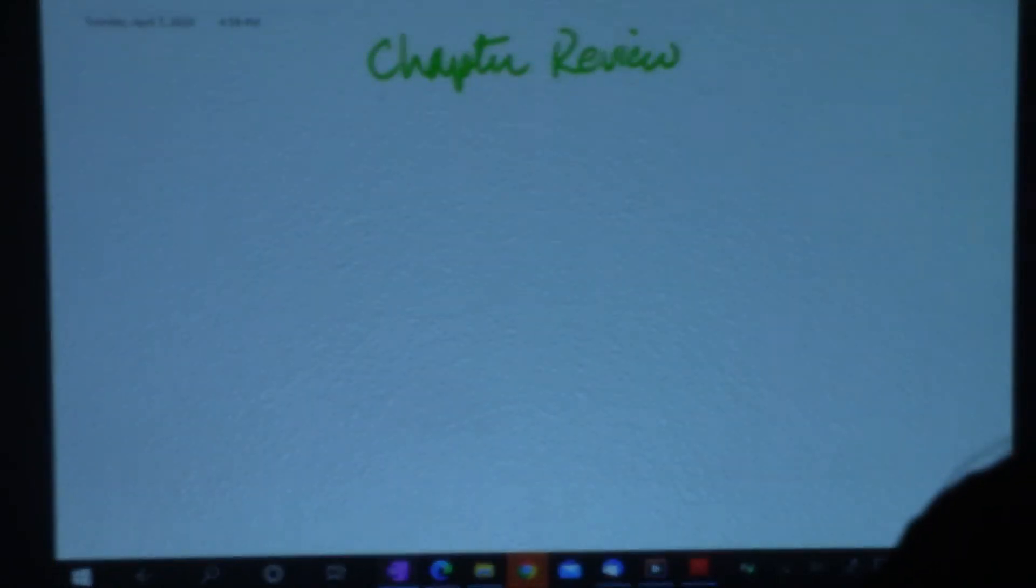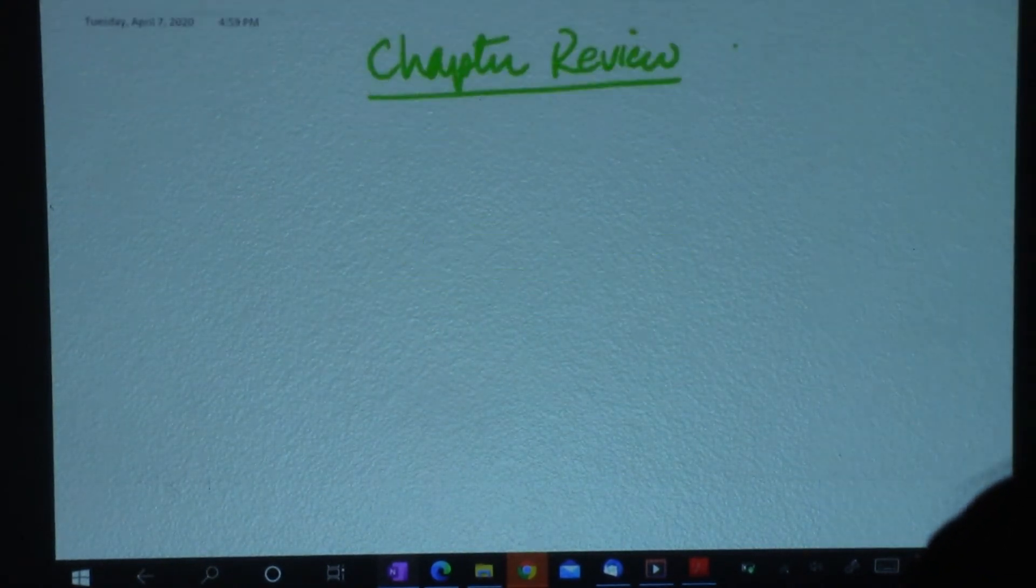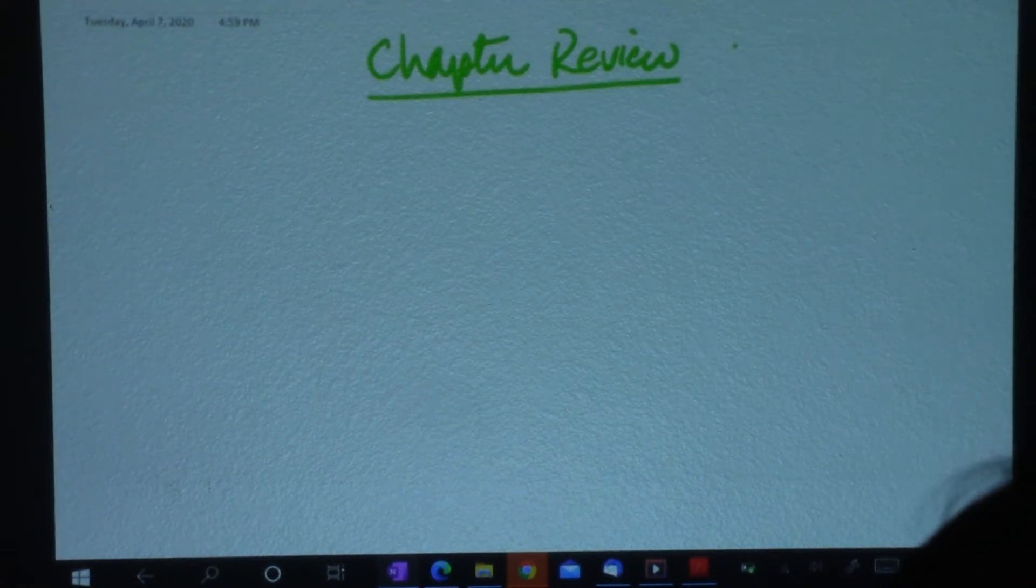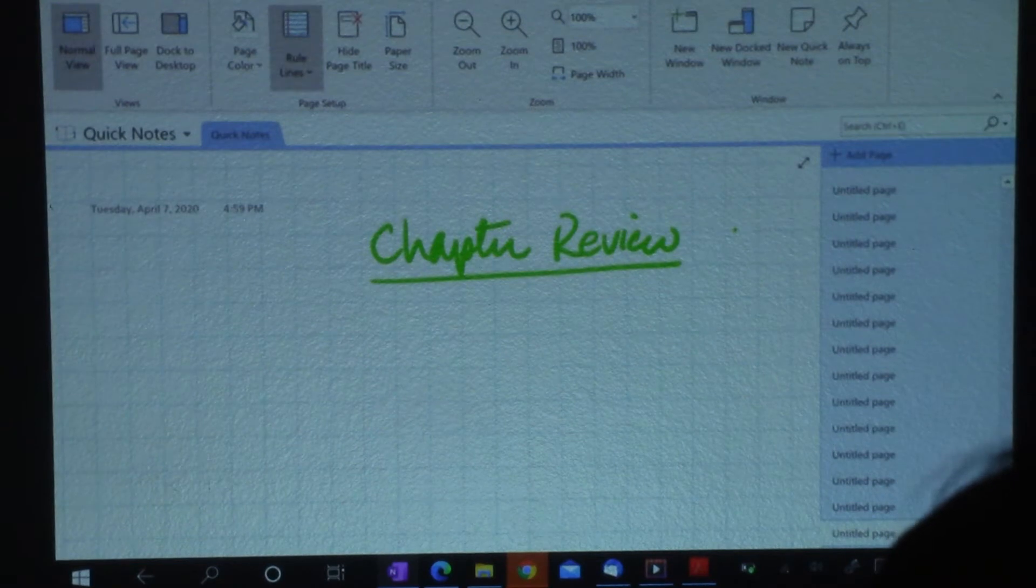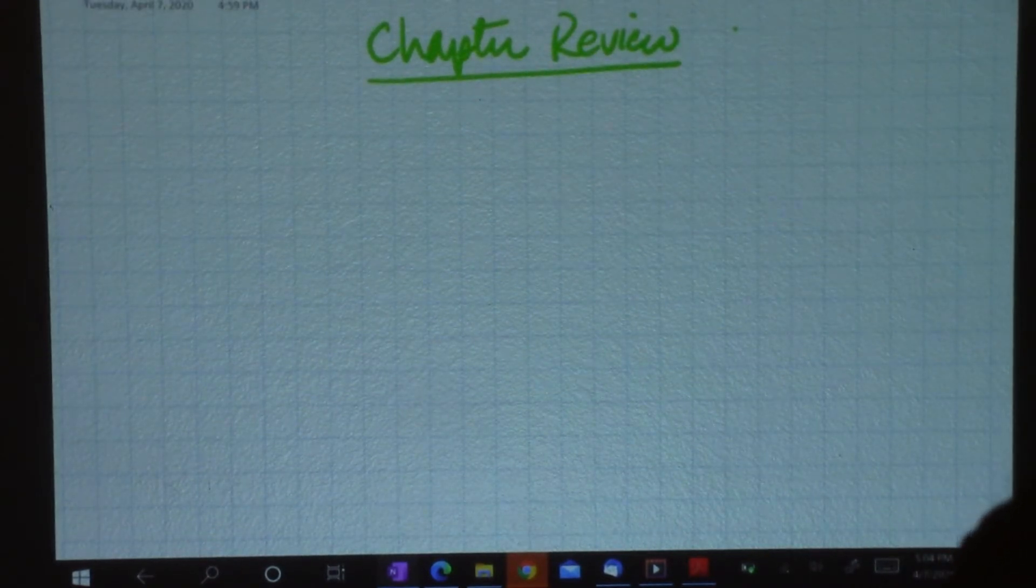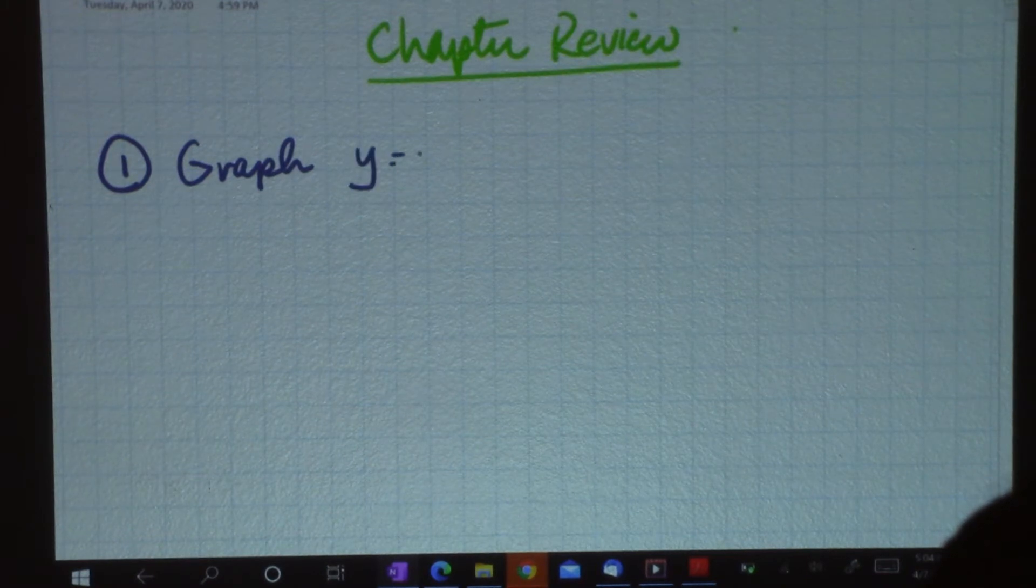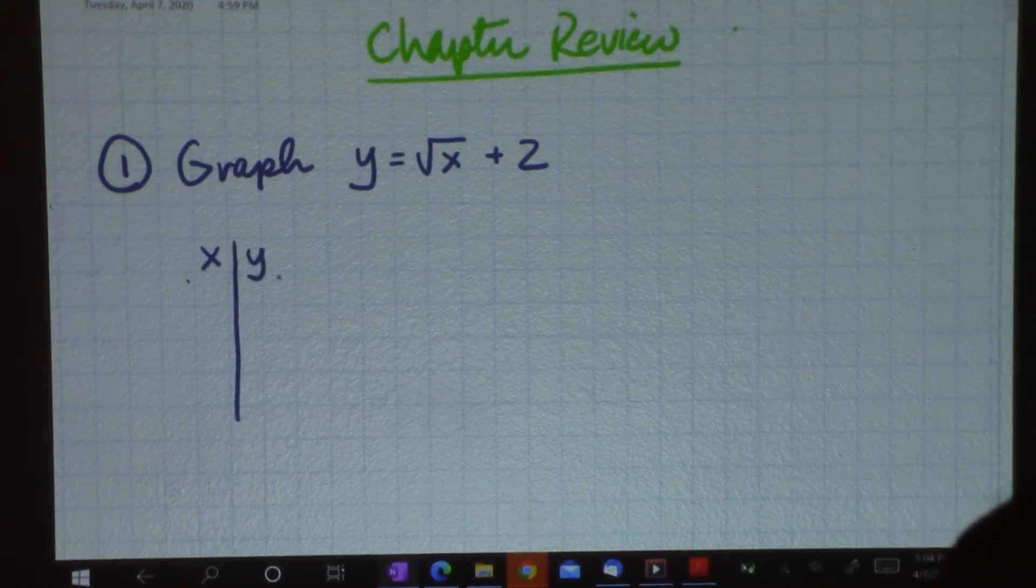Here is the light and we're going to have chapter review. I want to change that to blue. So this is for chapter 11 and I'm just going to go through and do some problems with you to help you relearn everything. The first thing that we did in this chapter was to graph square root functions. So we're going to graph y equals the square root of x plus two.